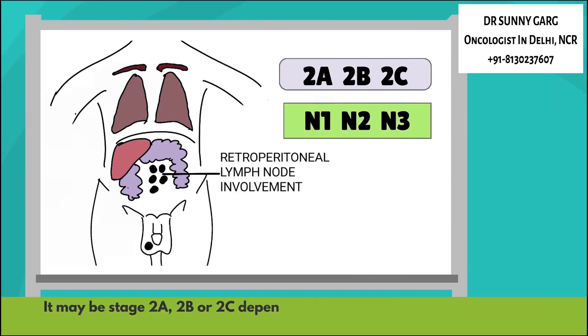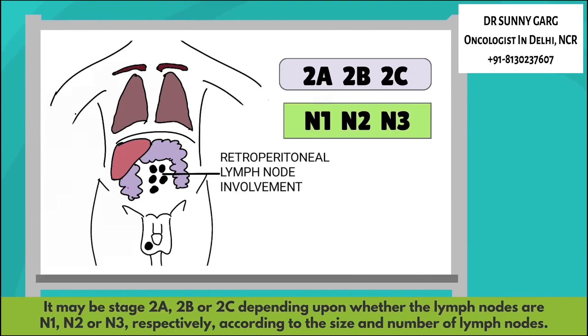Stage 2 may be further classified as Stage 2A, 2B, or 2C depending upon whether the lymph nodes are N1, N2, or N3 respectively, according to the size and number of lymph nodes involved.